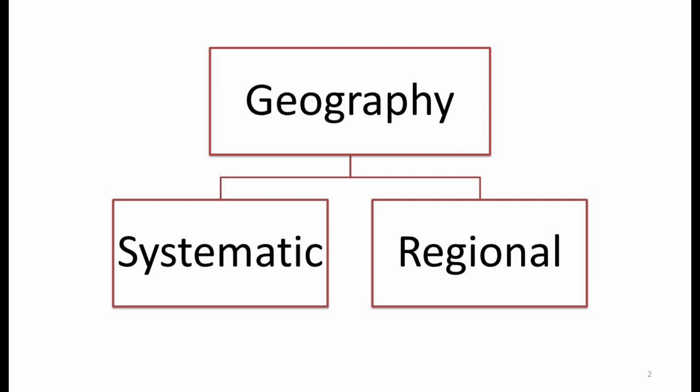To define systematic and regional approaches precisely: if we take one phenomenon, concept, law, or theory and study it in a generalized way all over the globe, that is the systematic part of geography. For example, if we study volcanoes — what types exist, how they are caused, and where they are found all over the globe — that is the systematic part of the subject.